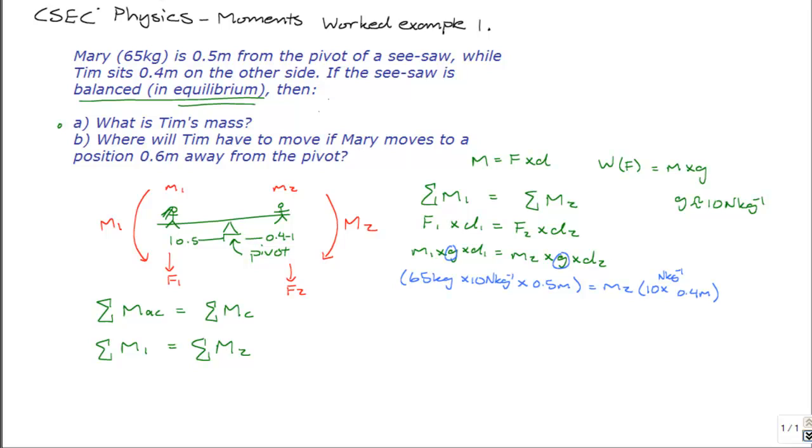Let's solve for M2, Tim's mass. M2 will be equal to 65 times 10 times 0.5 divided by 10 again times 0.4 meters.